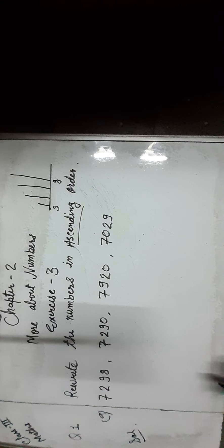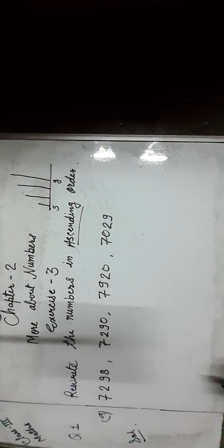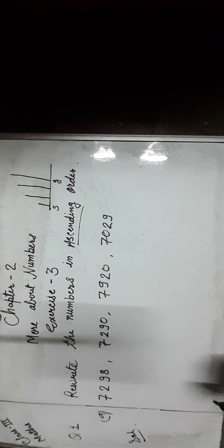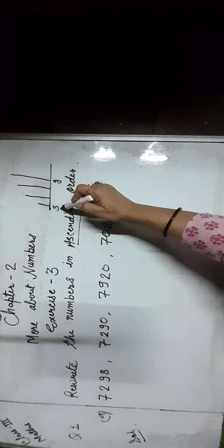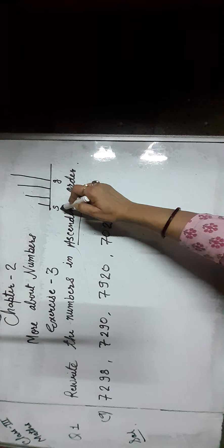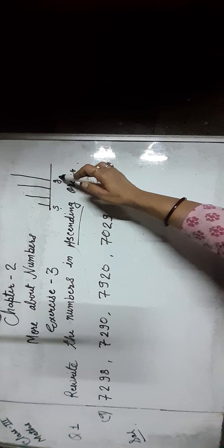Good morning students. Today we will do exercise 3 of chapter 2. Let us do question number 1: rewrite the numbers in ascending order. Ascending means going up from the smallest to the greatest.